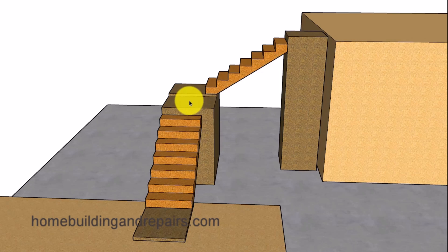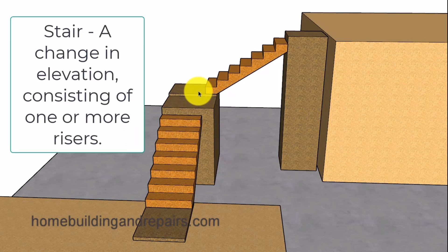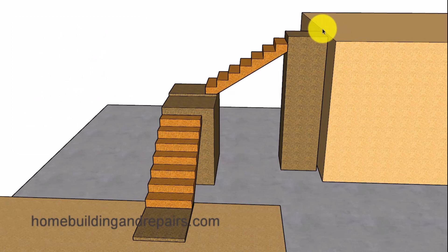Stairway: one or more flights of stairs. And in this one here, we would have a flight of stairs here, a flight of stairs here, and then a step and a step or what even might be referred to as a stair. So the definition for stair is a change in elevation consisting of one or more risers, which we would have right here and right here.